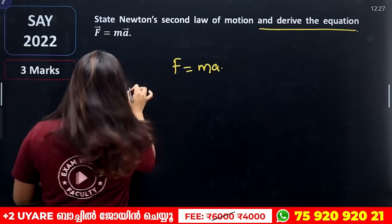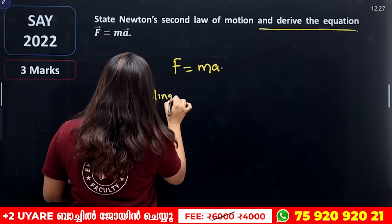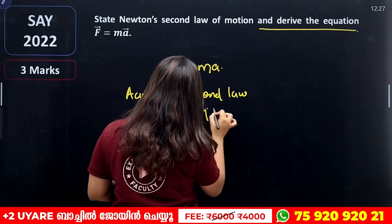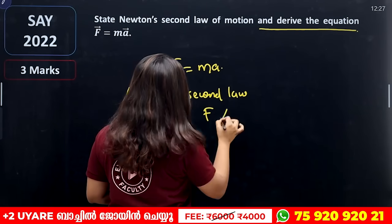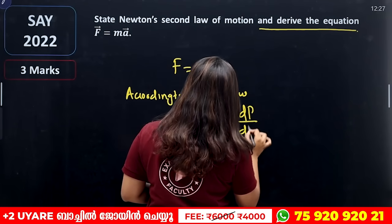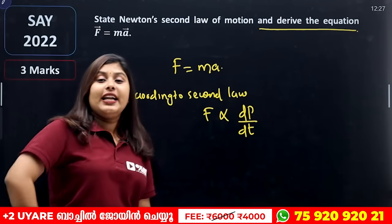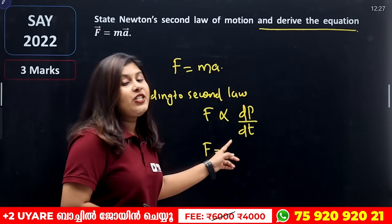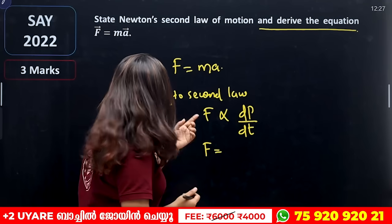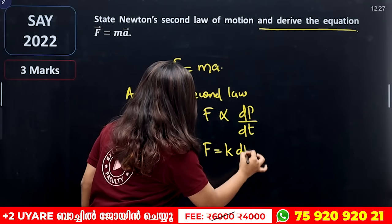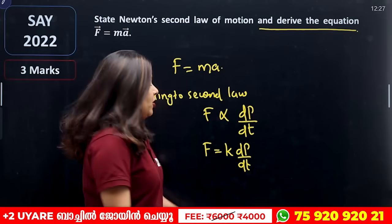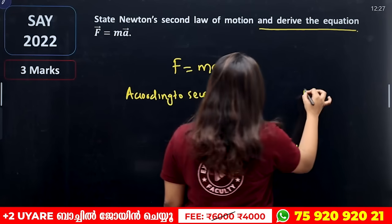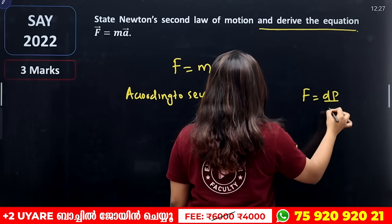According to the second law, external force is directly proportional to the rate of change of momentum. F is directly proportional to rate of change of momentum. F is equal to K into dp/dt. We have a proportionality constant K. What is the value of K? The value of K is 1.